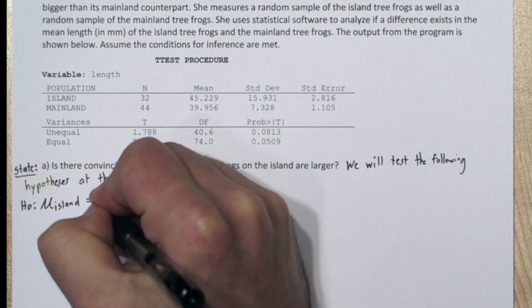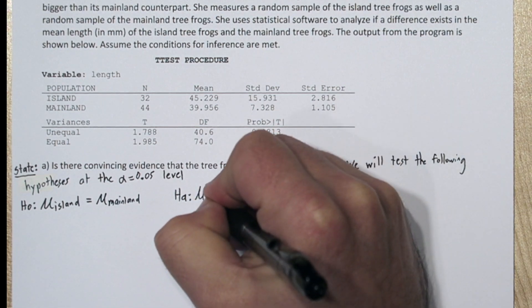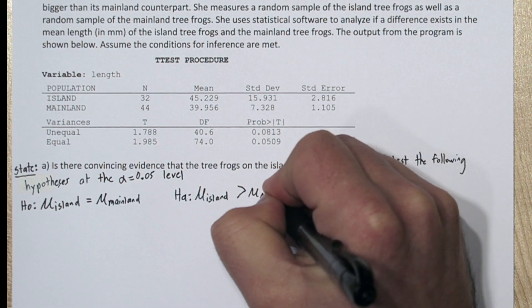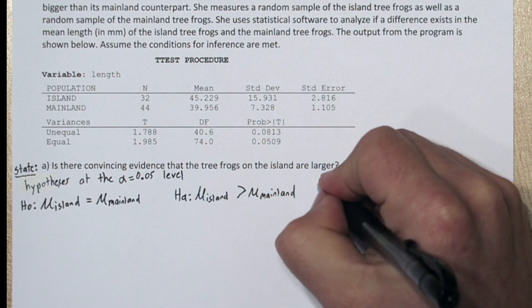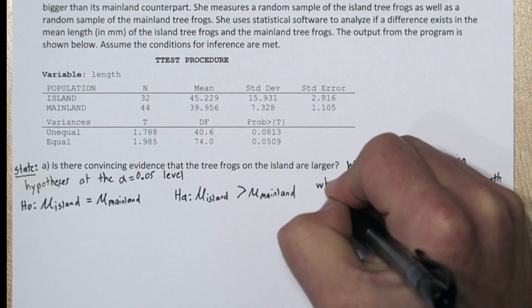So our null hypothesis is that mu sub-island equals mu sub-mainland. And our alternative hypothesis is mu sub-island is greater than mu sub-mainland, where mu is the true mean frog length for each of these populations.